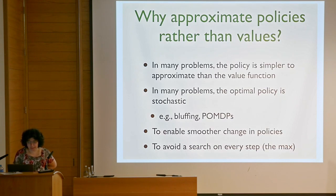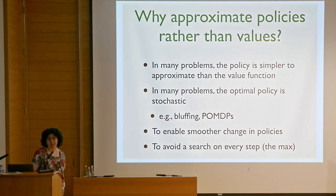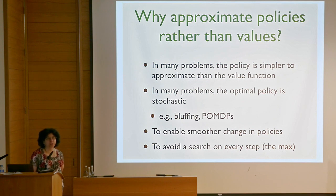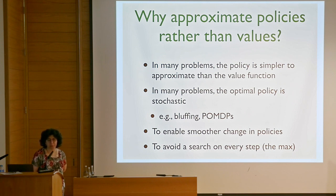In principle, you could do other forms of search in policy space—randomized policy search, evolutionary methods, and so on. But if you have information about the most reliable direction, you might as well use it. That information typically comes from the temporal difference error. Sometimes it's easier to approximate the value of these policies, and you can change the policy in a smooth way by design without needing to compute maxes at every step.